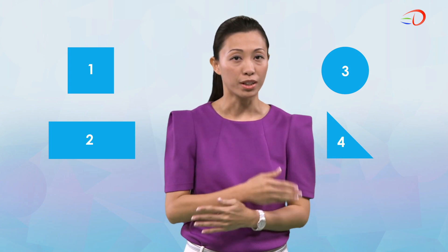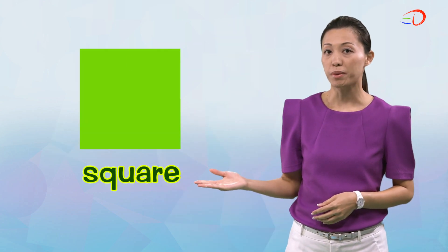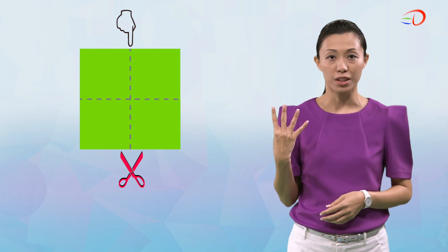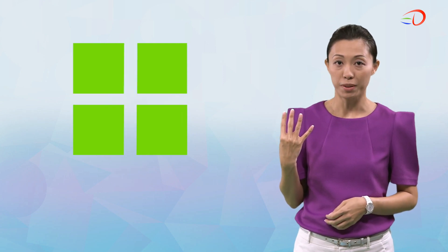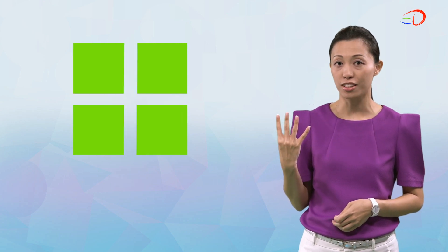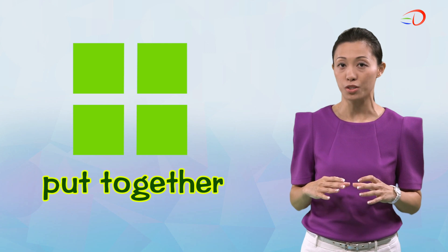Do you know that they can be found in one another? Let me show you an example using a square. A square can be cut into four smaller identical squares. Similarly, the four identical squares can be put together to form a bigger square.